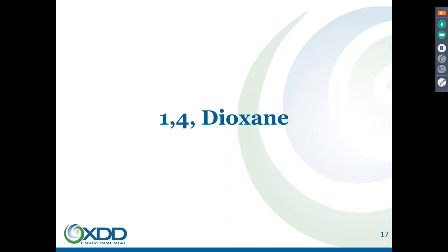Let's talk about 1,4-Dioxane. None of these contaminants are really emerging in the sense that they've been around for decades. 1,4-Dioxane has become more prevalent because of toxicological information suggesting we should be concerned about it. One of its primary uses is as a stabilizer in chlorinated solvents, and therefore a lot of chlorinated solvent sites where you weren't testing for 1,4-Dioxane now find they have it.